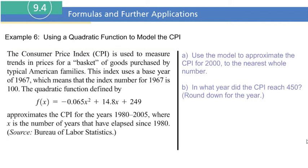All right, in this last example, we're actually going to use some real-life data that was taken by the Bureau of Labor Statistics. This is pretty neat that they're able to derive this quadratic equation by looking at all the data. We won't be deriving this equation, but you can do that on a graphing calculator. The Consumer Price Index is used to measure the trends in prices for a basket of goods purchased by typical American families. This index uses a base year of 1967, which means that the index number for 1967 is 100.